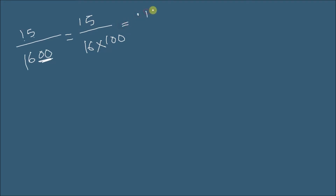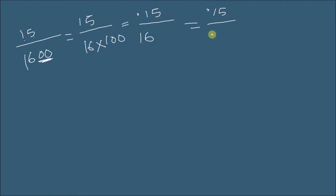So we have 0.15 divided by 16. Now we write 16 in the form of 2 to the power 4. To convert the denominator into a power of 10, we multiply by 5 to the power 4 in both the numerator and denominator.